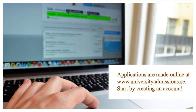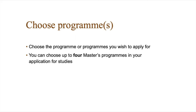All applications are made online via universityadmissions.se. This is the national application portal to use when applying for studies at any Swedish university. Start by creating an account, and make sure to add an email address you have access to and check regularly. The email address you provide will be the one used to communicate with you during the application process. After you have created an account, you can choose the programs you want to apply for — up to four master's programs at any university in Sweden.